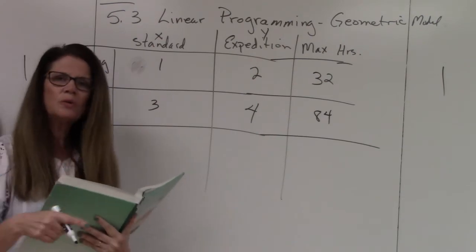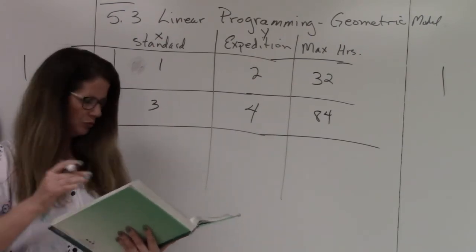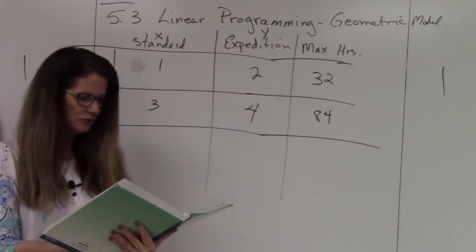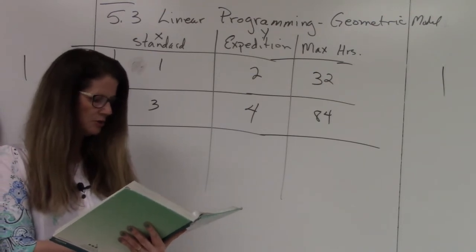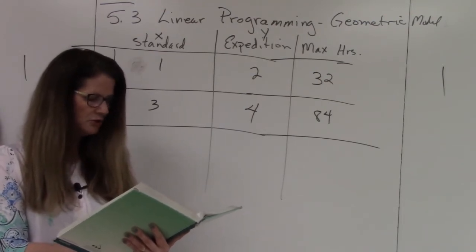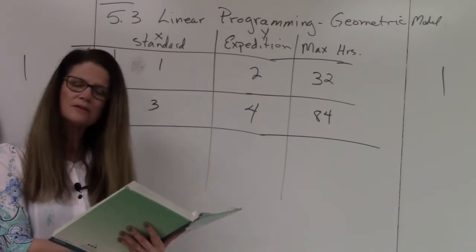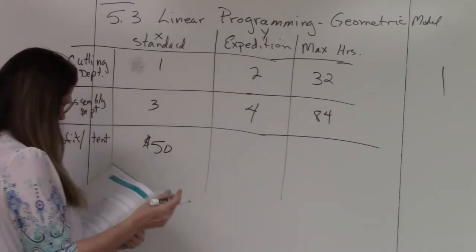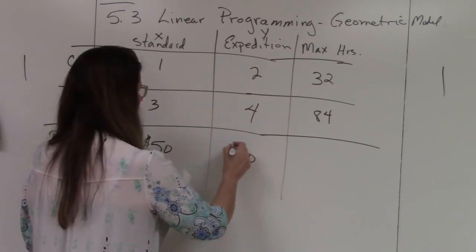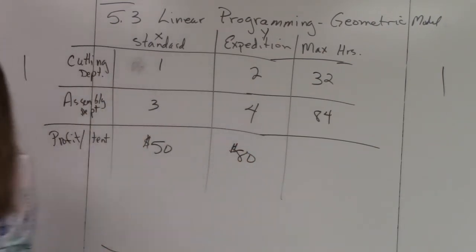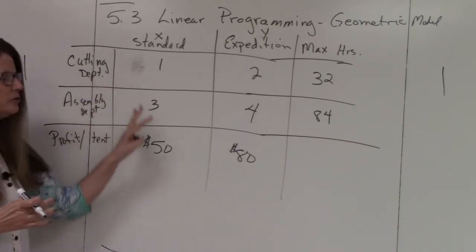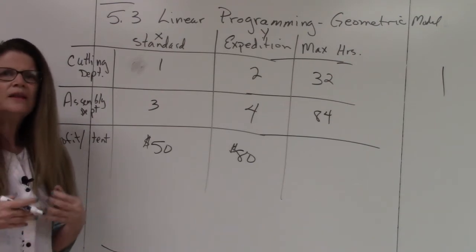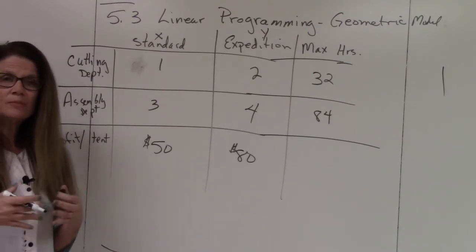If the company makes a profit of fifty dollars on each standard tent and eighty dollars on each expedition tent, the question is how many tents of each type should be manufactured to maximize the daily profit. Now I'm going to create the two inequalities and the chart.